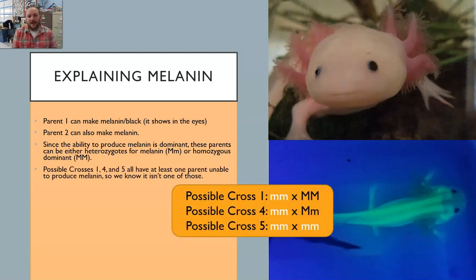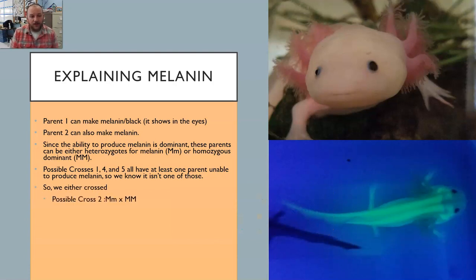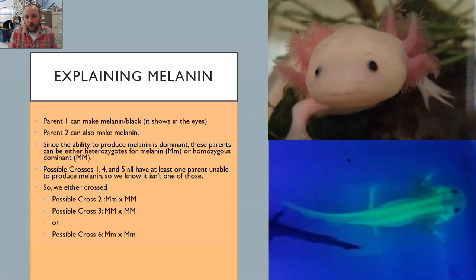Our question is: what cross did we do? Looking at our possible crosses, we know it's not crosses one, four, and five, because each of those have one parent that can't make melanin — or in the case of cross five, two parents that can't make melanin. Both of our parents could. Neither of our parents are homozygous recessive for melanin production. So it has to be either cross two, where it's a heterozygote and a homozygous dominant; cross three, where it's two homozygous dominants; or cross six, where both are heterozygous. We don't know which it is by looking at them, but the offspring had some that didn't make melanin — a small fraction, but some.